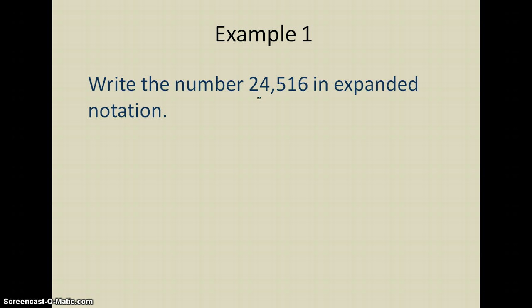If I'm doing the number 24,516, I'm going to start with the 2 because it's the first number. The place value of the 2 is the ten thousands place. I know that because I can count backwards from the ones place: the 6 is in the ones place, the 1 is in the tens place, 5 is in the hundreds place, 4 is in the thousands place, and the 2 is in the ten thousands place. So if I'm writing this out in expanded notation, I'm going to say that I have 2 ten thousands.